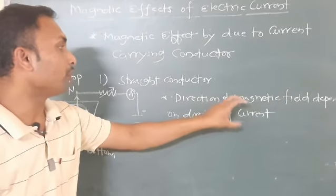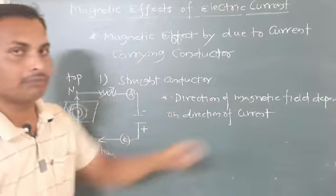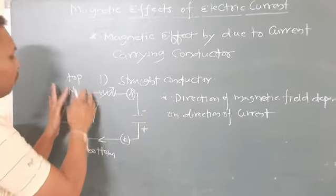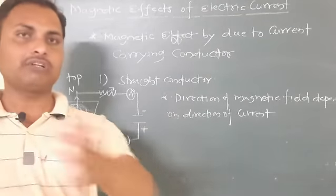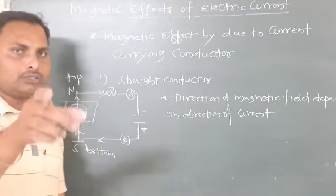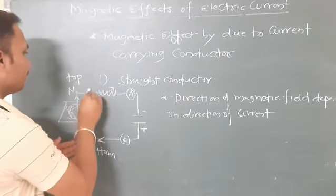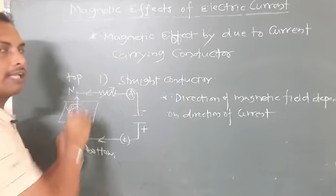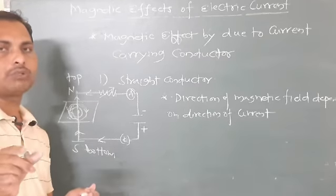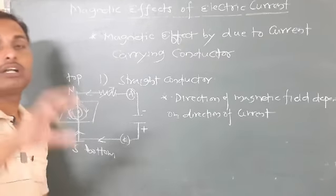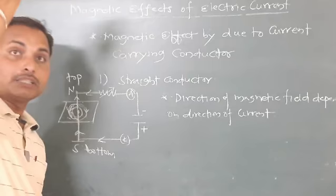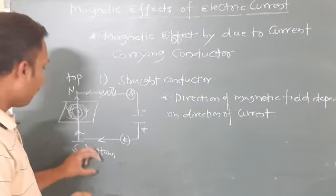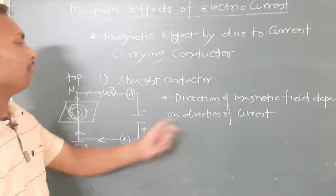This is a very important point. If the current is flowing from top to bottom, the direction of the magnetic field is clockwise. When it is flowing from bottom to top, it is anticlockwise.